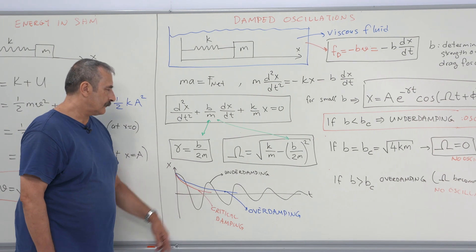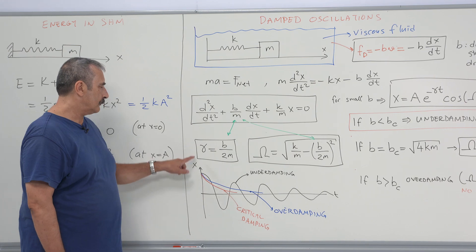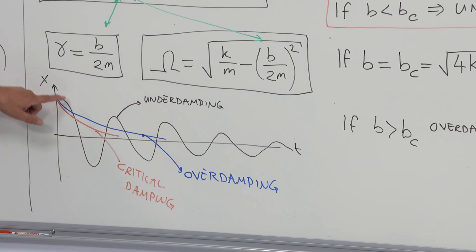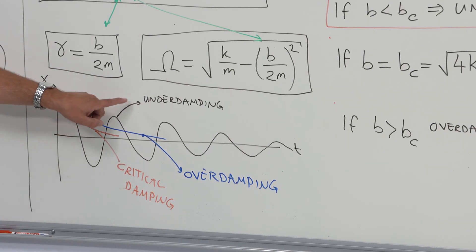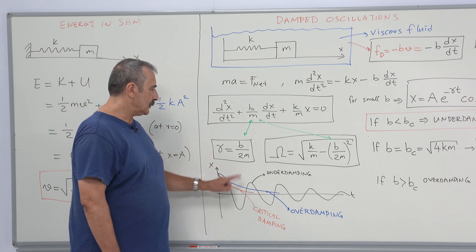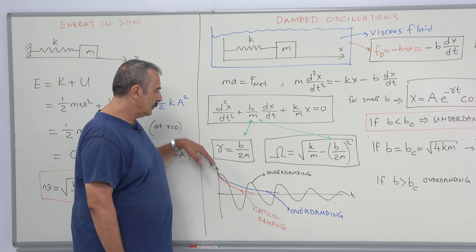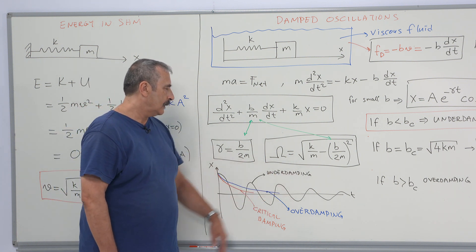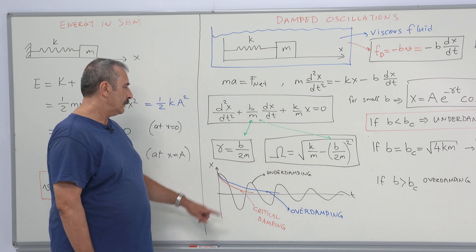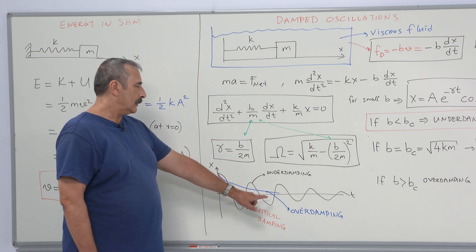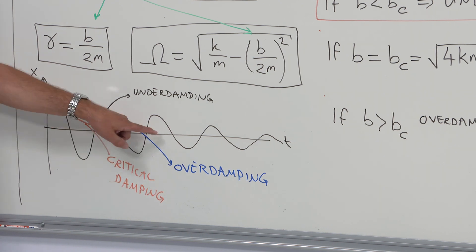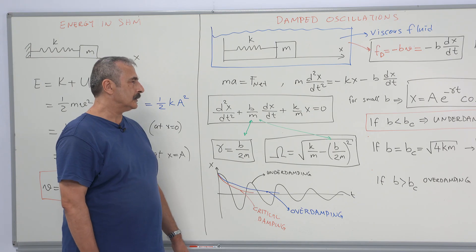Here is a sketch of the displacement-time relation for both regimes. For underdamping we observe the oscillatory behavior under an exponentially decaying envelope. For overdamping we observe only exponential decay.